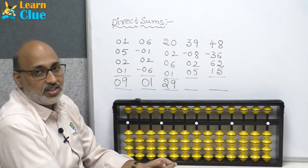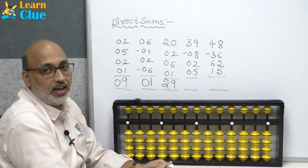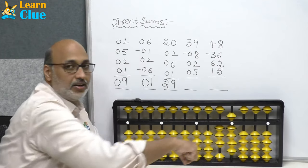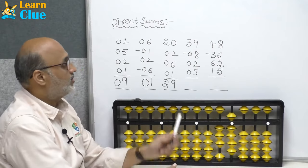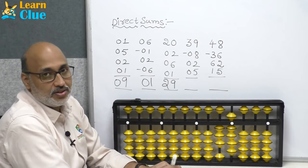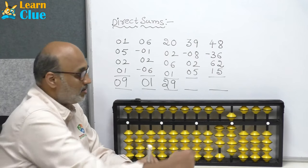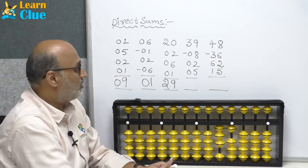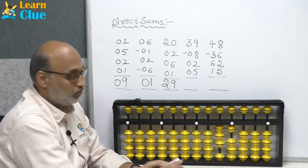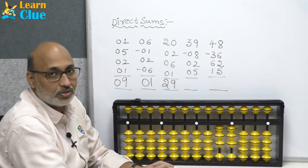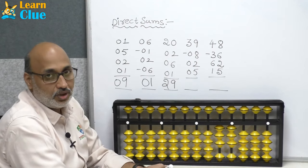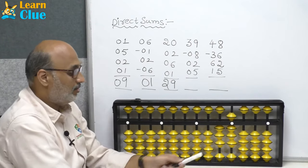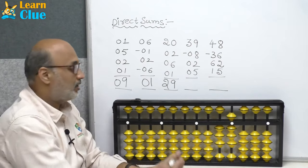Clear the abacus. Next problem: 39. Place 30 first, then 9 — higher denomination always first. Now minus 8: minus 5 here, minus 3. Now plus 2 — directly add 2. Plus 2 again — directly add 2. Plus 5 — add 5 with your index finger. What is the answer? 38 is the answer.